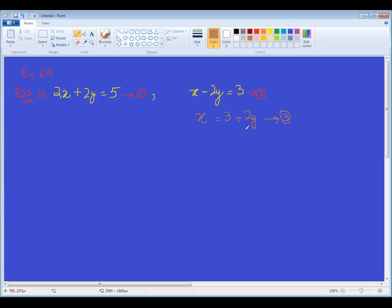This x is equal to 3 plus 2y in equation 1. Okay? So, this x is equal to 3 plus 2y in equation 1. Now substituting, 2 times 3 plus 2y plus 2y is equal to 5. I have set the value of x and I have put the value in the first equation.